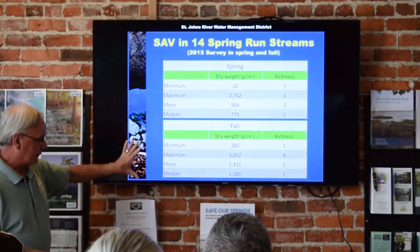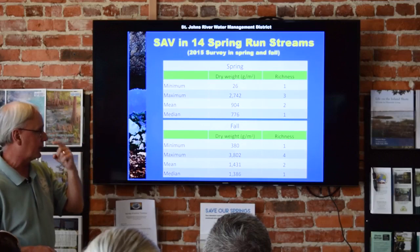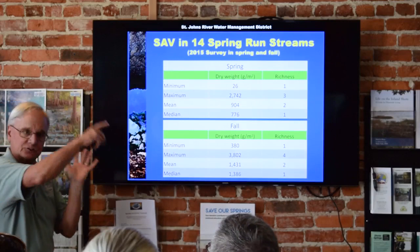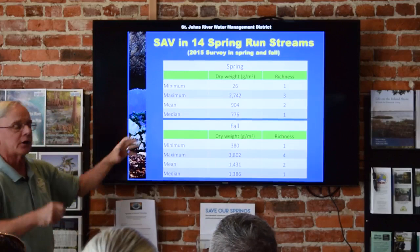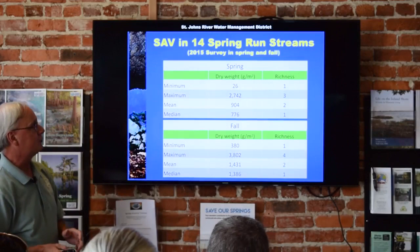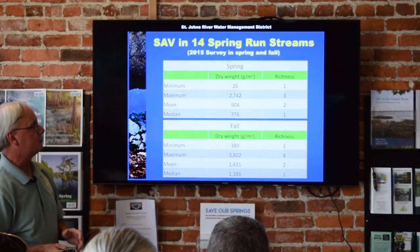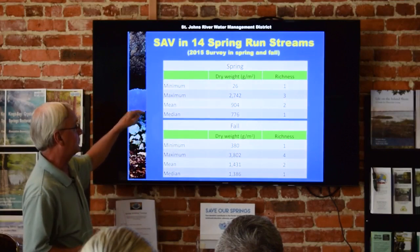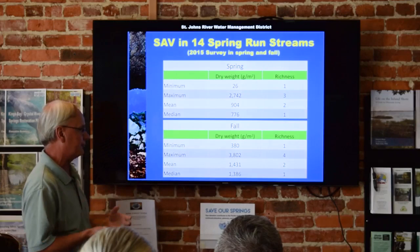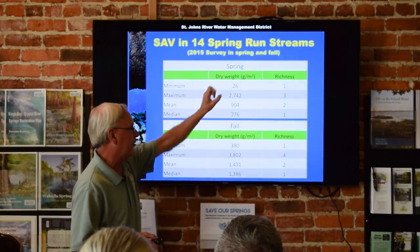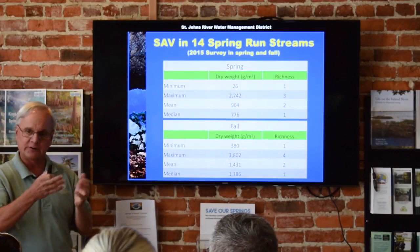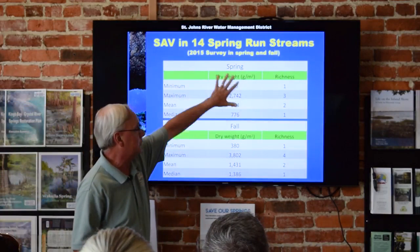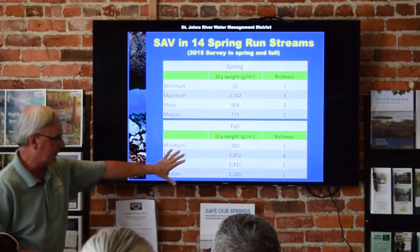Here's biomass data — rather than cover — from a project where a contractor surveyed 14 spring run streams, including springs along the St. Johns, Weeki Wachee, and Manatee Springs. They clipped leaf biomass, dried it in the lab, and got a dry weight per unit area. They sampled in spring and fall. The fall value is quite a bit higher because the growing season for submerged vegetation is late spring to early summer, so spring biomass is reduced from winter die-back, and you see the summer regrowth by fall.